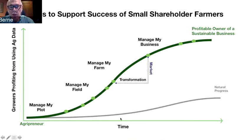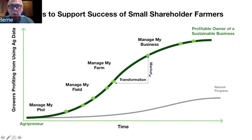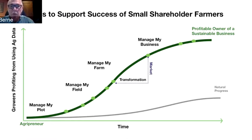Our goal in these webinars is to really allow agripreneurs to be more successful — from managing a plot to managing a field, then on up to managing a farm, treating that as a business and becoming a profitable owner of a sustainable business. Part of the point of this series is to say that if we let things go as they are, progress may be slow, but if we do some things, we can accelerate transformation and give you more ability to be profitable sooner.